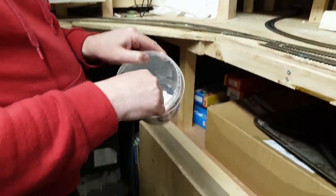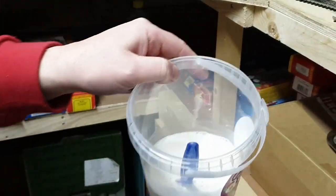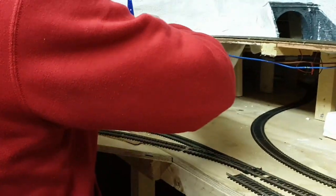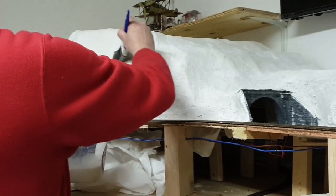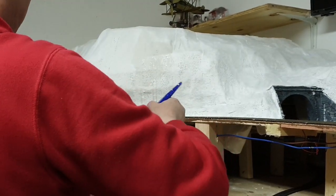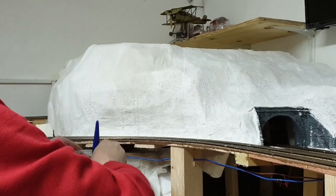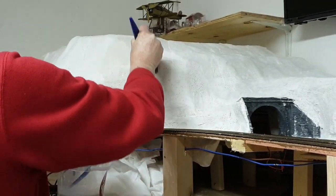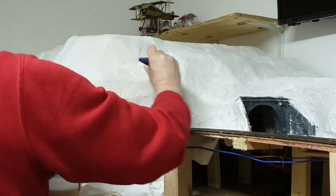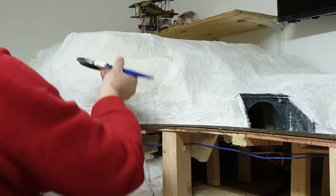I mix it up so there is a watery mixture so it's like consistency of milk, and I get an old paintbrush and I just paint that mixture on. And what it does is the little bits of plaster suspended in the water will fill in the holes. Now you may have to do a couple of coats of this to get a good coating.